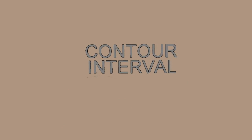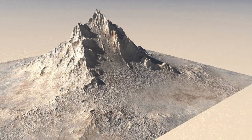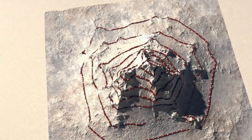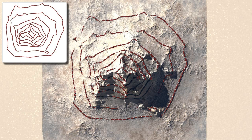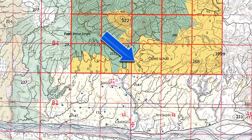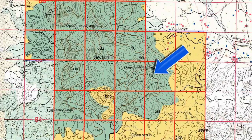Contour lines are the lines which join the points of equal elevation. Generally, these are shown in brown color, and their pattern resembles the shape of the land. The value of a contour is written towards the ascending side or on the contour themselves, such as 400, 200, 300, etc.